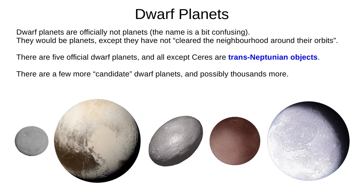These are the five dwarf planets. Note that they're not officially planets, so the name dwarf planet is a bit misleading — they would be planets, but they haven't cleared the neighbourhood around their orbits. All five official dwarf planets except Ceres are trans-Neptunian objects. There are a few more candidate dwarf planets, and possibly thousands of others. For some reason, Makemake isn't mentioned in the Astronomy GCSE.